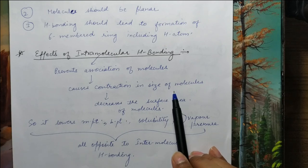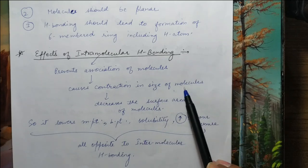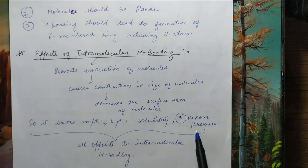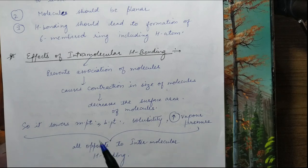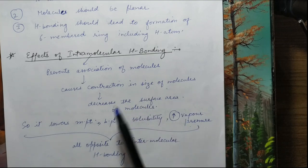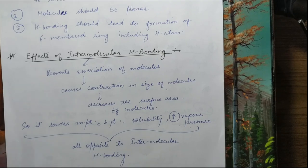The third condition is that after hydrogen bonding, a six-membered ring must form, which includes the hydrogen atom. This brings stability. So these are the conditions for intramolecular hydrogen bonding. Now the effect of intramolecular hydrogen bonding: because of intramolecular hydrogen bonding, molecules will not associate with each other, since the hydrogen atom is already involved in intramolecular bonding and cannot bond with another molecule. This means the overall size of the molecule is reduced, surface area decreases, and consequently melting point, boiling point, and solubility all decrease, while vapor pressure increases.